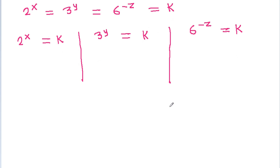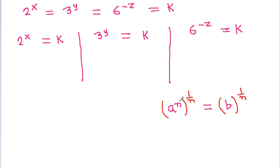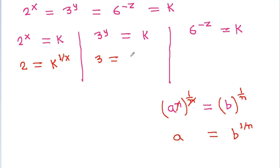If we have a power n is equal to b, then we can raise both sides to the power 1 by n. And n will get cancelled, so a will be equal to b power 1 by n. So, 2 will be equal to k power 1 by x, and 3 will be equal to k power 1 by y, and 6 will be equal to k power minus 1 by z.